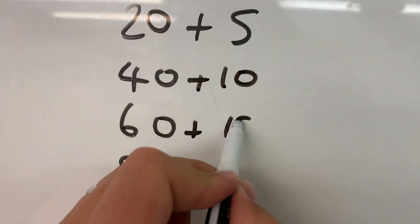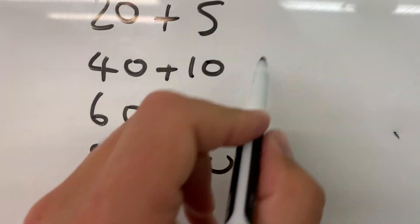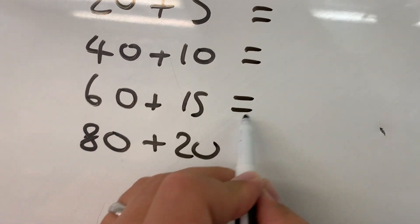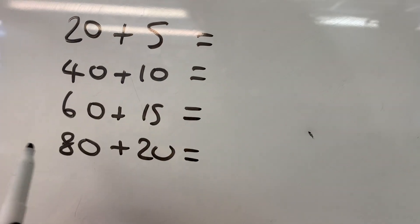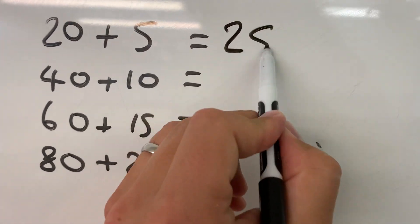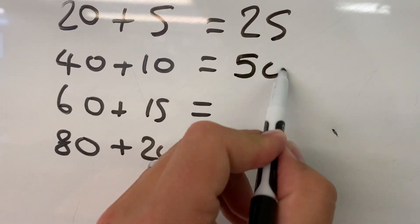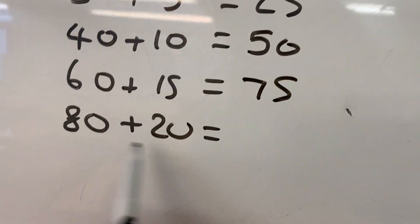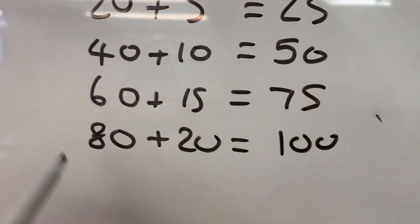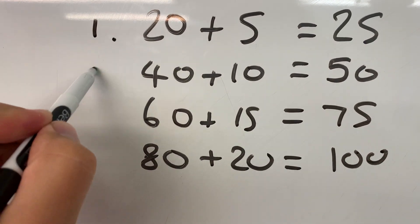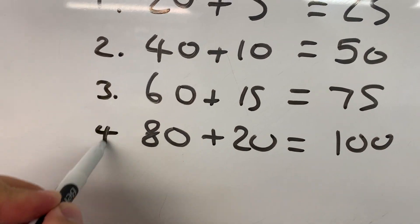10, 15, 20, and that will give you, nice and simply, that will give you your 25 times table. 25, 40 plus 10 is 50, 75, 100. Don't forget to number them as well because that will tell you how many times you've multiplied 25.